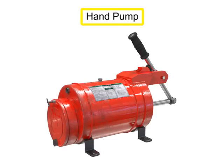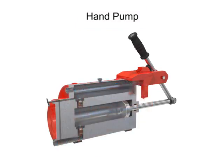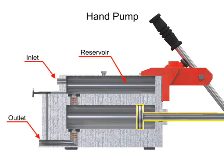Hand pumps are used when a source of power is not available or where the extra expense of a power pump isn't warranted. For example, they are used on shop presses and other portable equipment, serve as standby pumps, and serve as sources of emergency power. Hand pumps are always of piston type and are usually constructed with a piston working between two check valves.